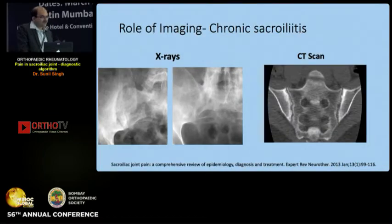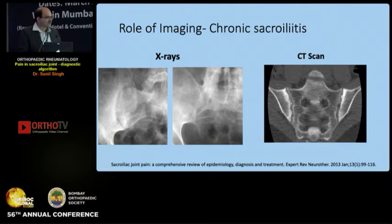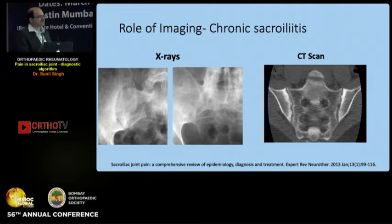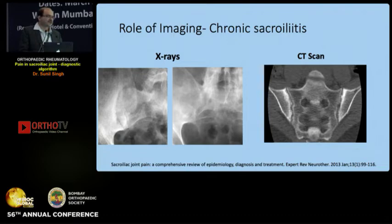Once the clinical assessment is complete, one looks to establish sacroiliitis on imaging. The choice of modality depends on the duration of disease. For chronic or long-standing symptoms, X-rays or CT are the modality of choice. X-rays, though difficult to interpret due to the oblique anatomy of the SI joint, can show Grade 3 and Grade 4 sacroiliitis. CT can demonstrate erosions and sclerosis more clearly and often helps rule out other osseous etiologies.